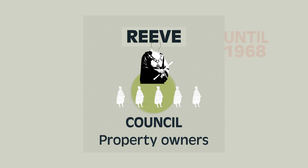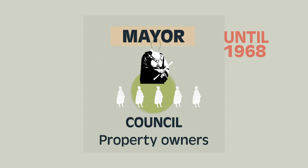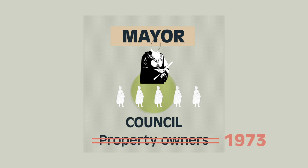Many British Columbian mayors were called reeves, and the requirement for council members to own property only ended in 1973.